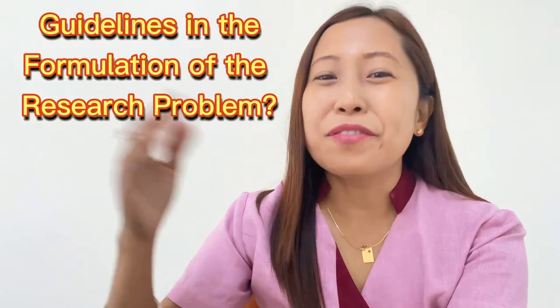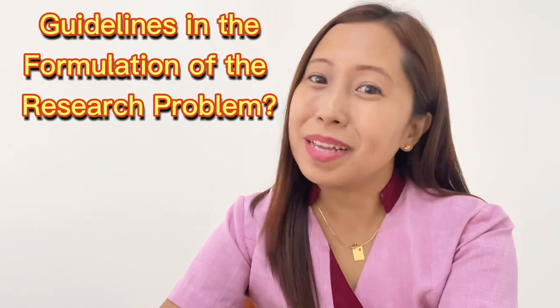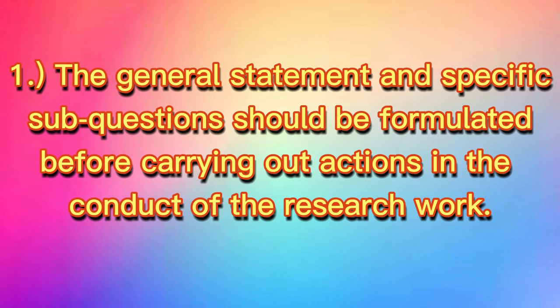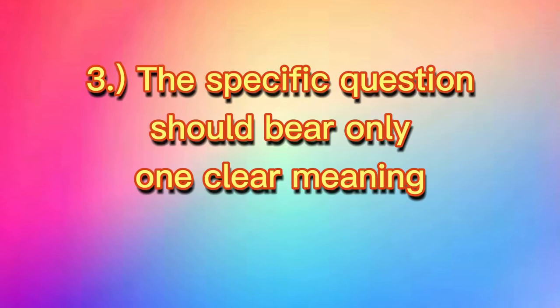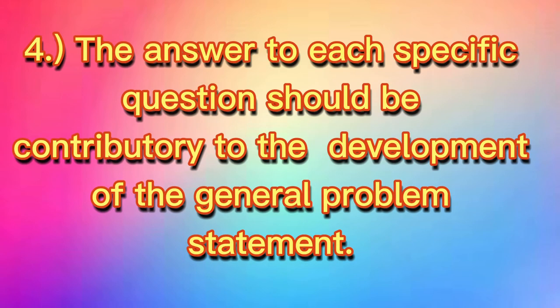What are the guidelines in the formulation of the research problem? Number one, the general statement and specific sub-questions should be formulated before carrying out actions in the conduct of the research work. Number two, state the specific sub-problems in interrogative form. Number three, the specific question should bear only one clear meaning. The answer to each specific question should be contributory to the development of the general problem statement.